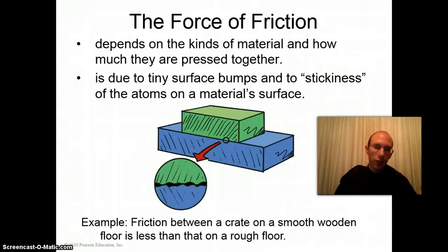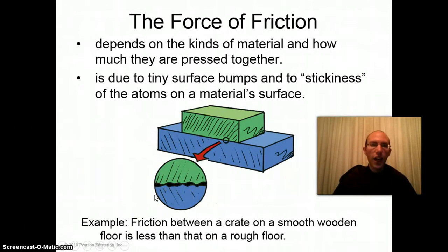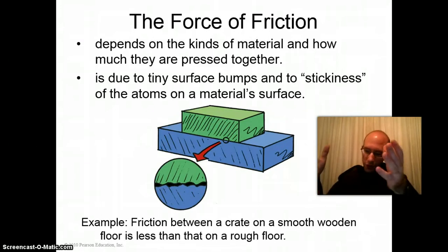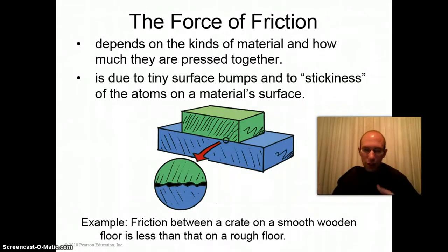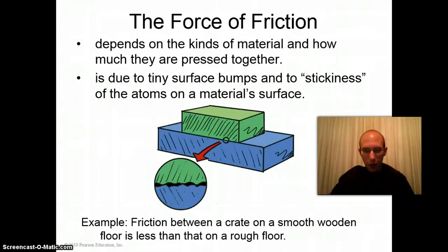Now, where is friction from? Well, if you zoom in — for example, as they do here — onto these two blocks, you'll see that any surface has a lot of tiny surface bumps, and it has some stickiness because of the atoms on the material's surface, and that's what causes friction. When you have this large block sitting on the concrete surface, the concrete surface isn't smooth, and neither is the block, and the two surfaces catch together when you push on the block.